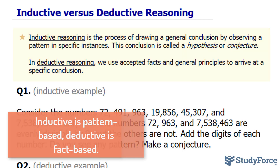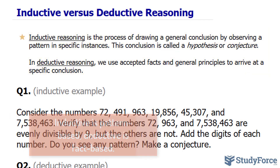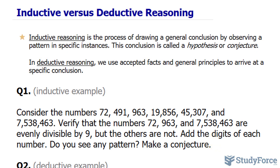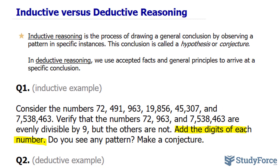In question number 1, which deals with inductive reasoning, consider the numbers shown on your screen. Verify that the numbers 72, 963, and 7,538,463 are evenly divisible by 9, but the others are not. Add the digits of each number. Do you see a pattern? Make a conjecture. The hint here is to add the digits of each number.